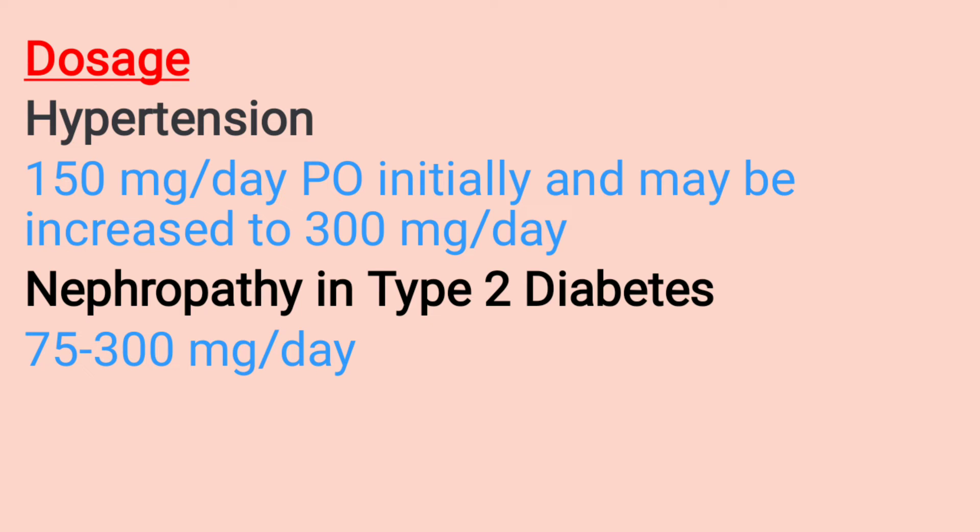Dosage in hypertension: the dosage for adults is usually 150 mg per day initially, and may be increased to 300 mg per day when necessary.